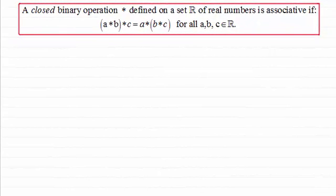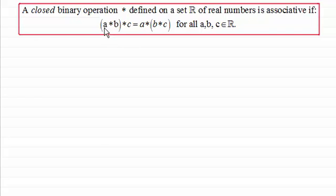Hi there. In this video I want to look at the property of associativity. If we look at this definition here, if we take a closed binary operation defined by star, and that's defined on a set R of real numbers, then it's associative if we have (a★b)★c equals a★(b★c).